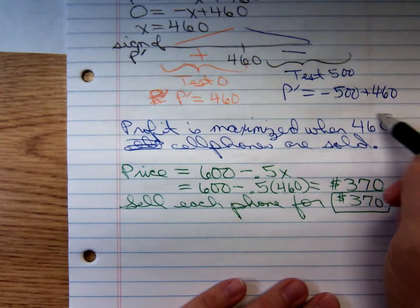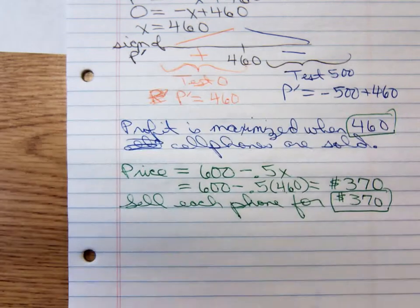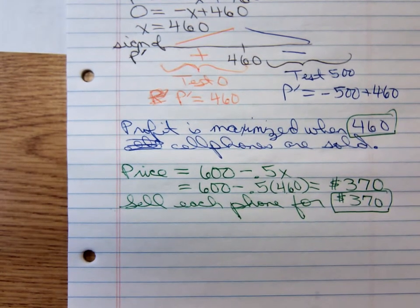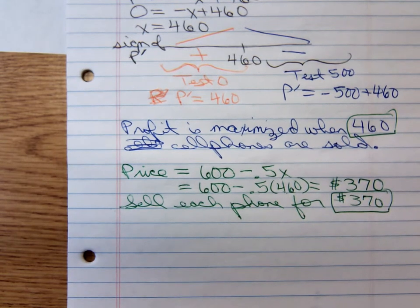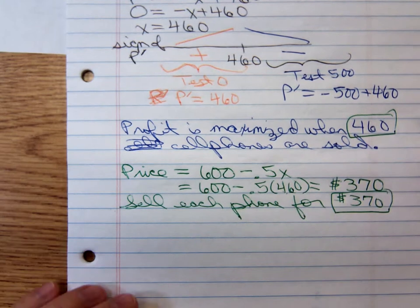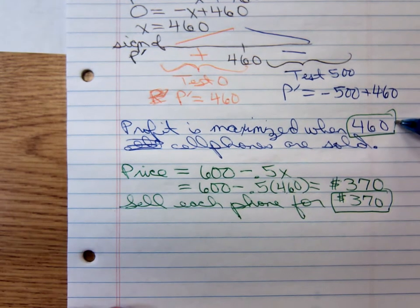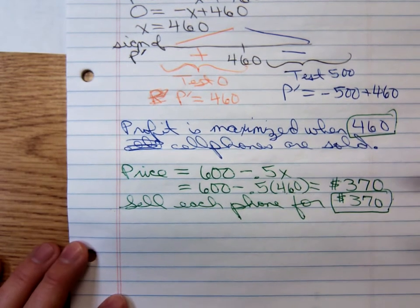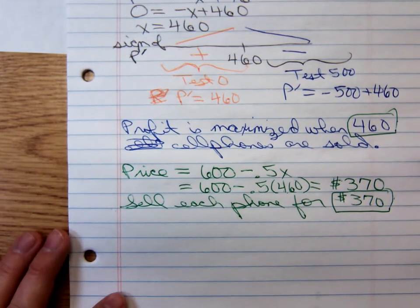So we found how many phones, oh, the motion sensor doesn't detect that I'm in here, and it cuts out the lights after a few minutes. Sorry about that. So we found how many cell phones we should sell to maximize profit. We found the selling price they should charge. All that's left now is to find what that maximum profit is.